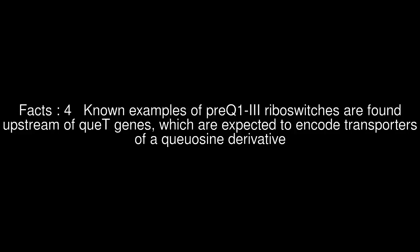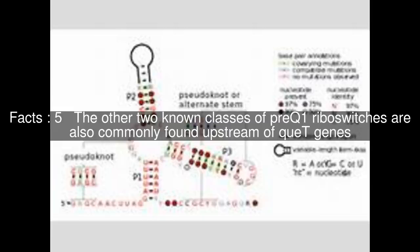Known examples of PreQ1-3 riboswitches are found upstream of KT genes, which are expected to encode transporters of a queuosine derivative. The other two known classes of PreQ1 riboswitches are also commonly found upstream of KT genes.